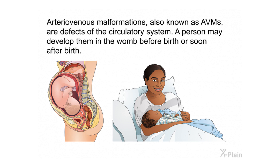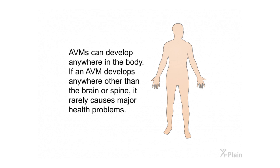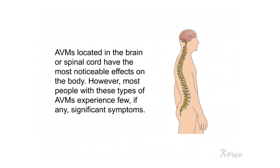Arteriovenous malformations, also known as AVMs, are defects of the circulatory system. A person may develop them in the womb, before birth, or soon after birth. AVMs can develop anywhere in the body. If an AVM develops anywhere other than the brain or spine, it rarely causes major health problems. AVMs located in the brain or spinal cord have the most noticeable effects on the body. However, most people with these types of AVMs experience few, if any, significant symptoms.